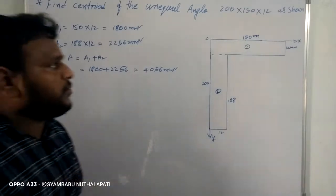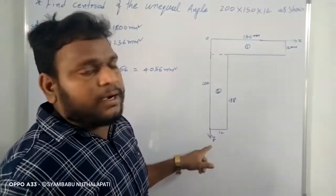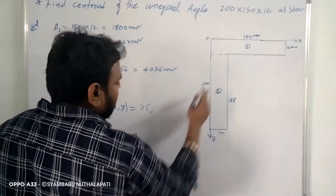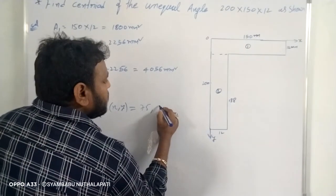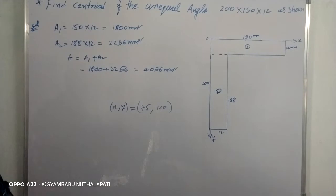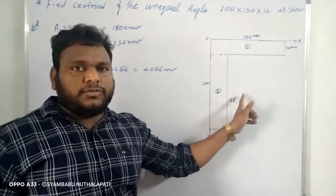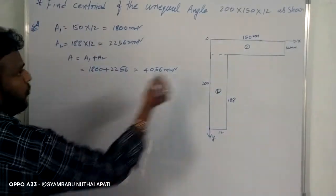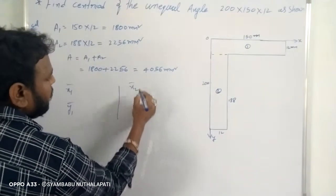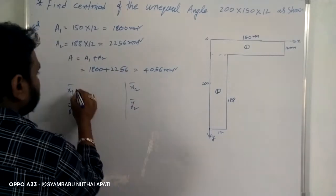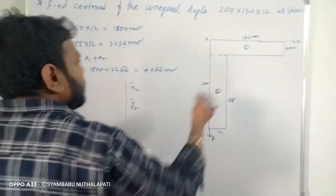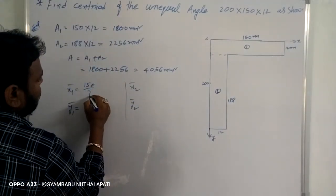The centroid approach: 150 by 2 is 75, and 200 by 2 is 100. We have two components — x1 bar and y1 bar, x2 bar and y2 bar. The first component centroid x is 150 by 2, that is 75 mm.